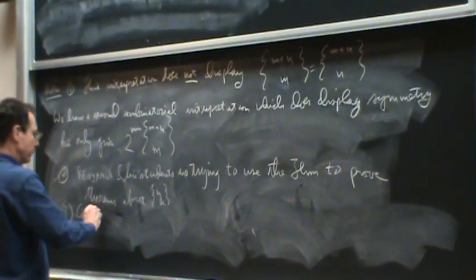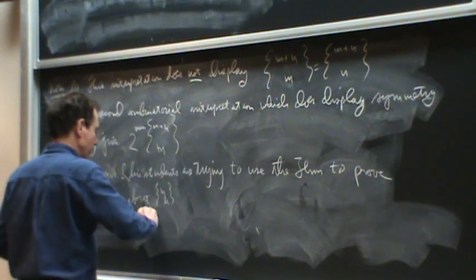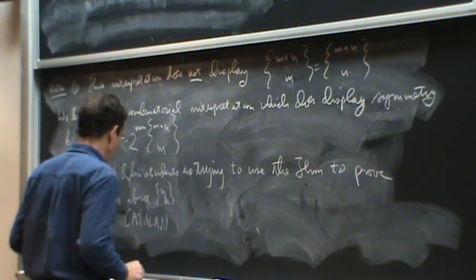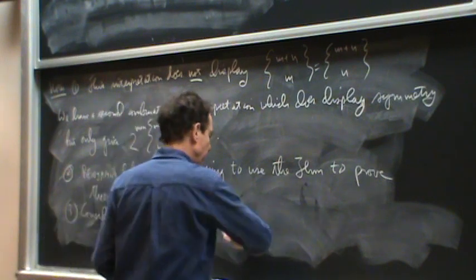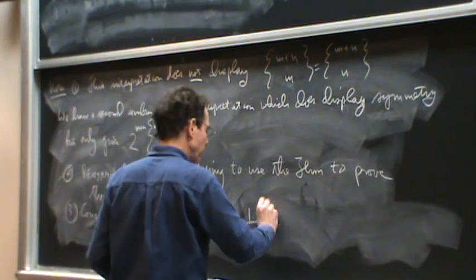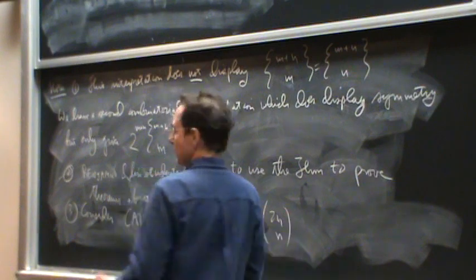Here's another thing that Carl and I are still trying to do, although we have not been able to. It's frustrating. It's really frustrating. So let's consider the Catalan numbers. Because they're very closely related to binomial coefficient. Right?